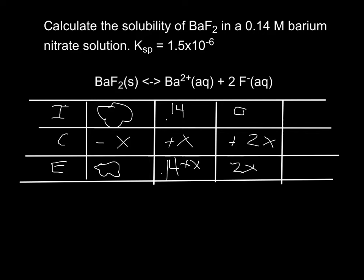The change that will occur is we will lose some amount X of the barium fluoride. And we will gain barium ions and 2X fluoride ions. At equilibrium you can see we have 0.14 plus X and 2X.